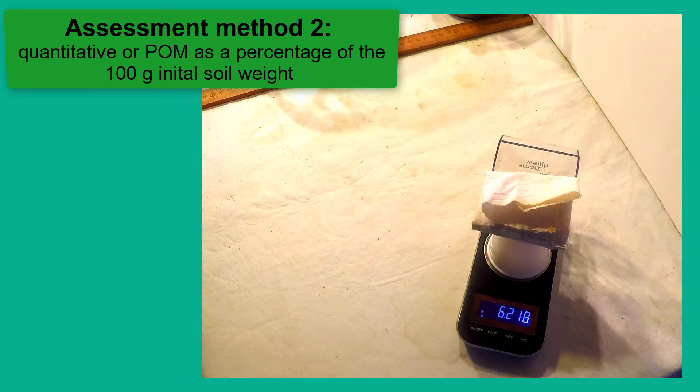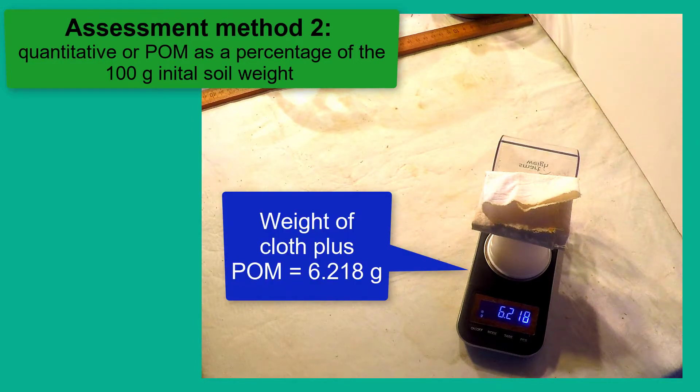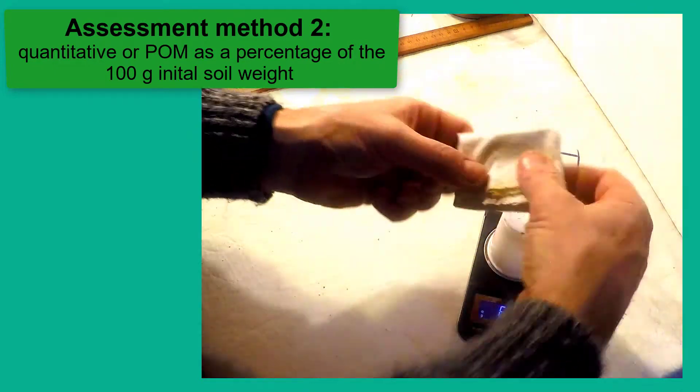Once the POM is weighed and the tare weight of the cloth is subtracted, the percentage POM in the soil can be calculated as shown here.